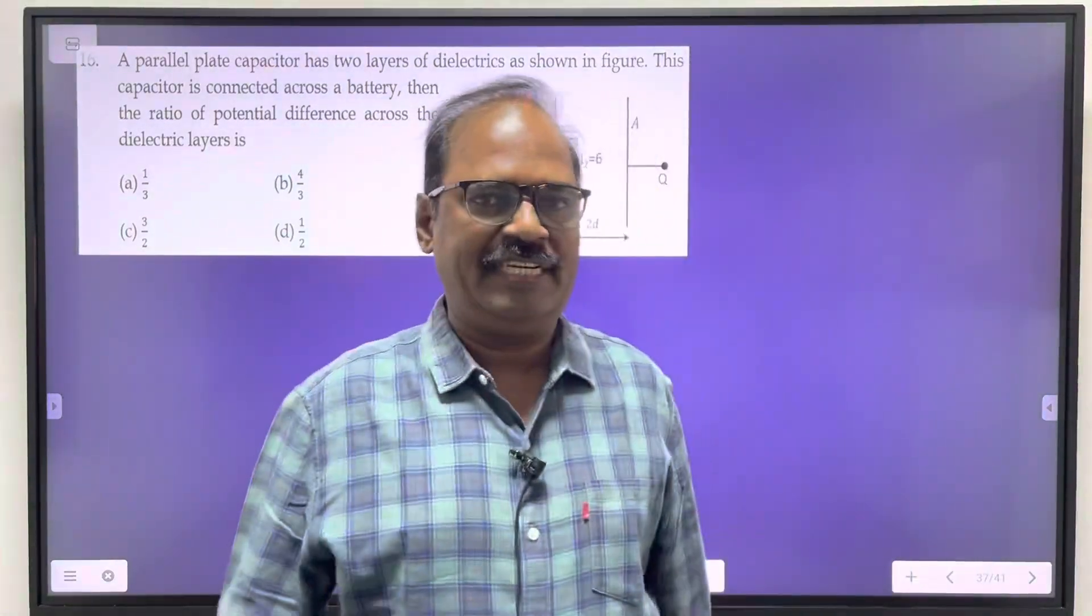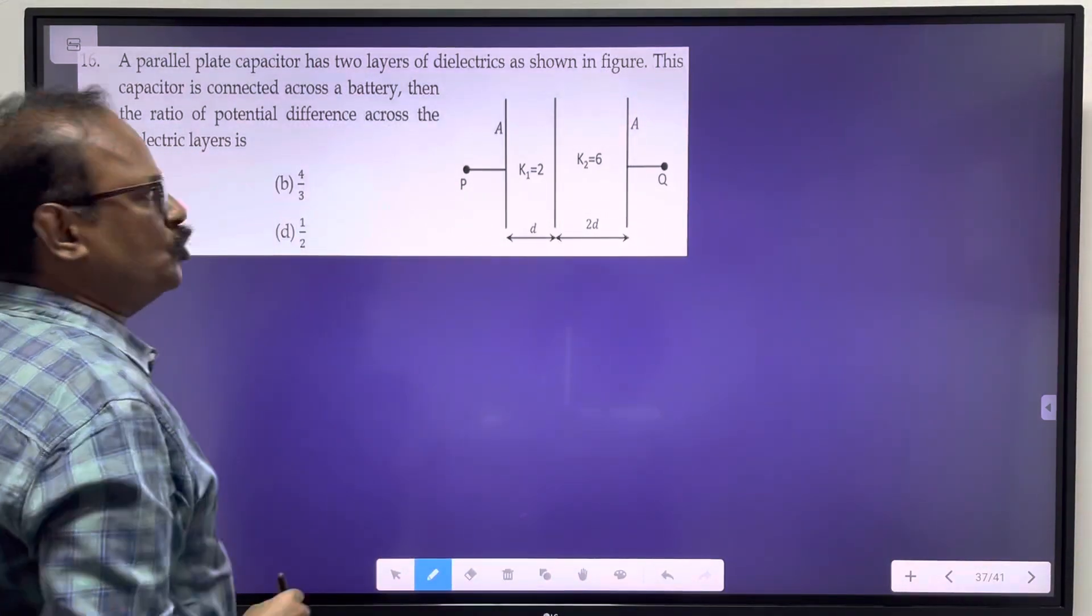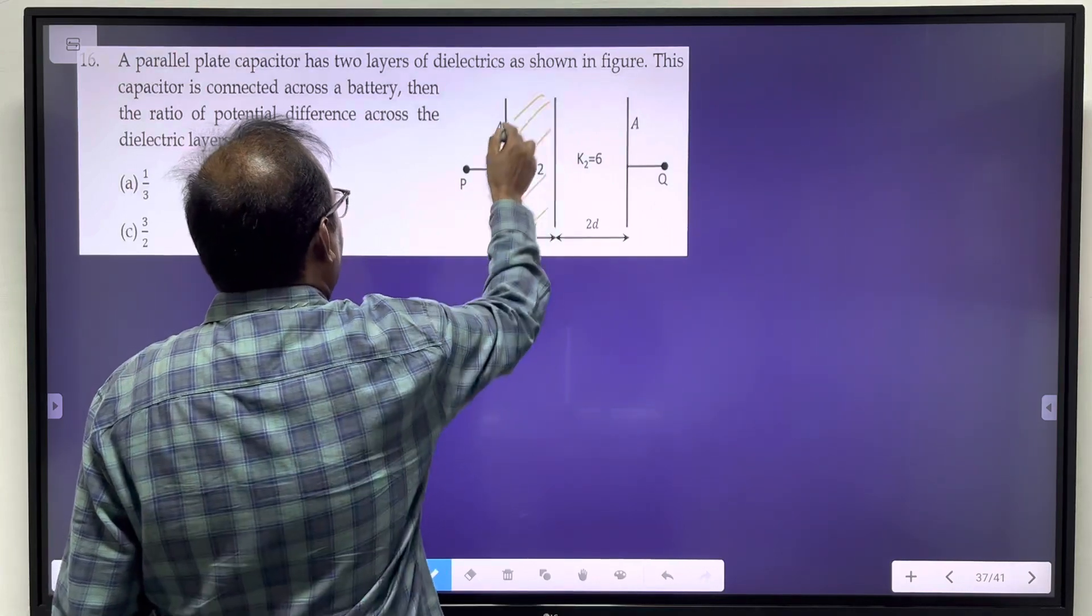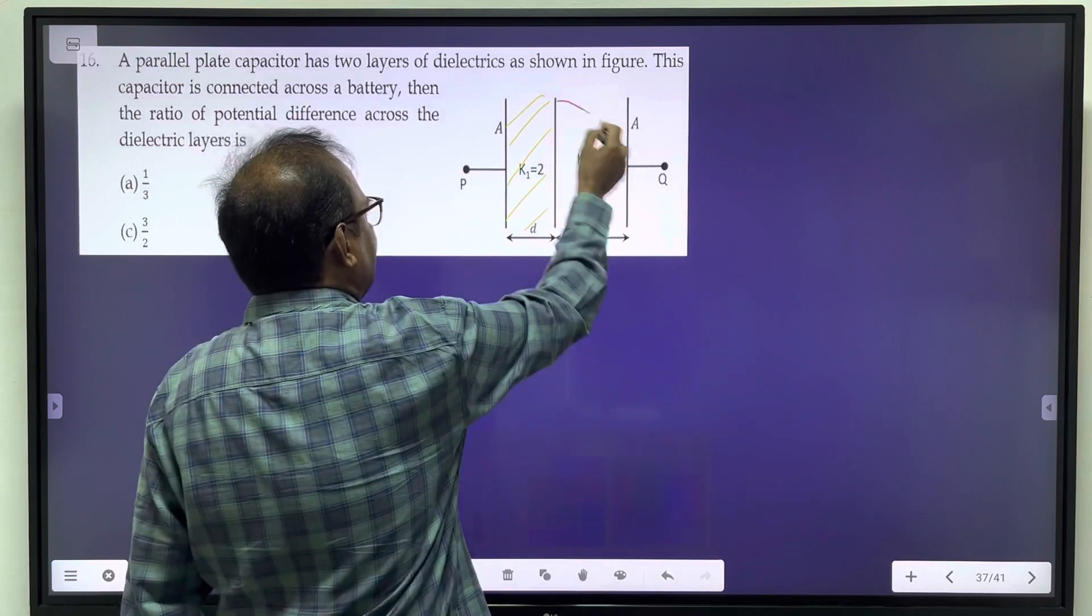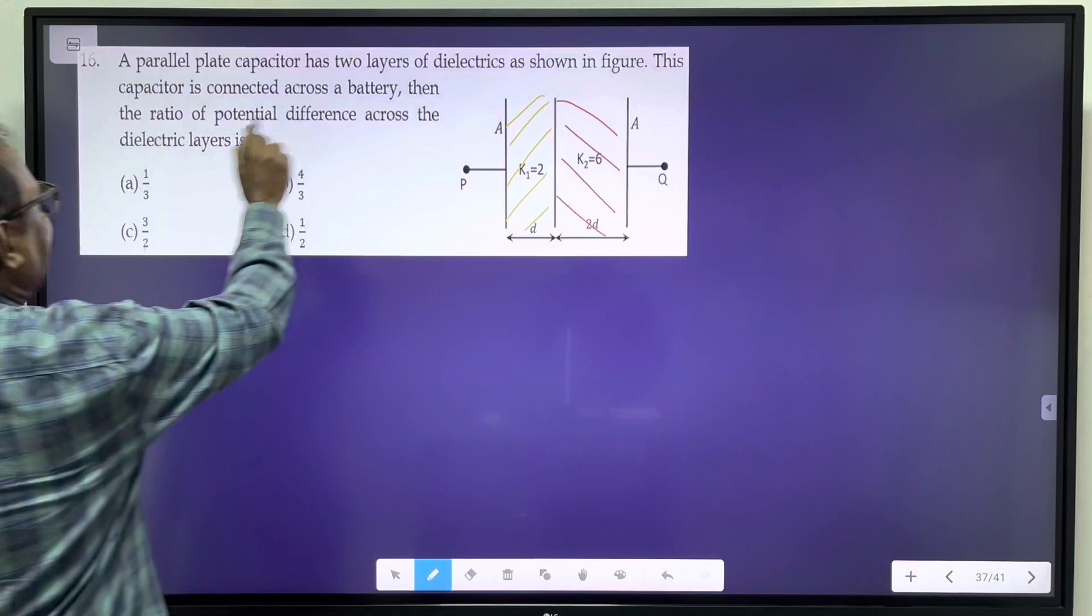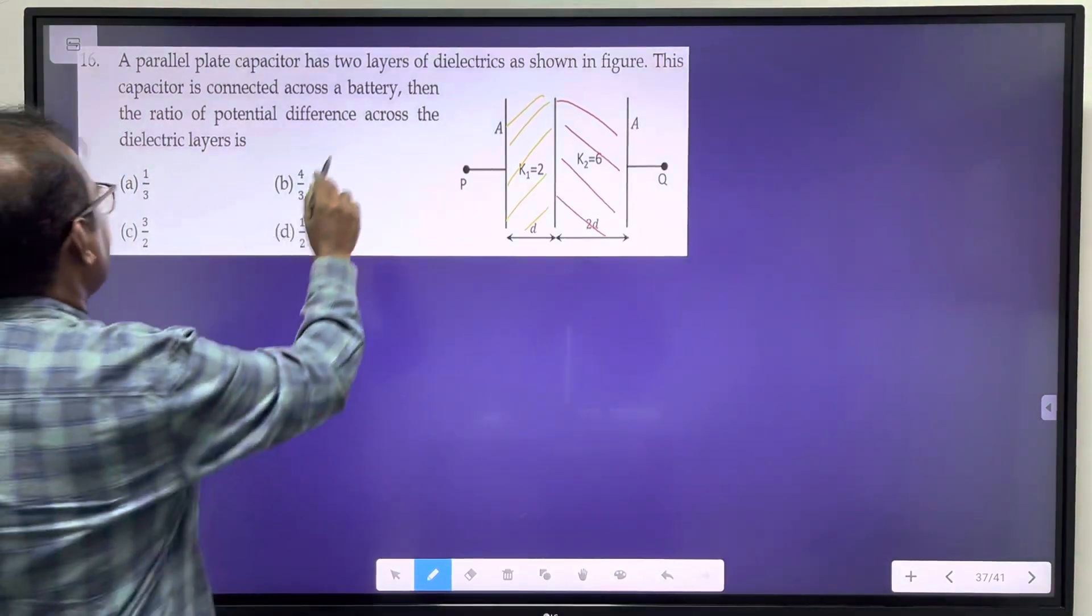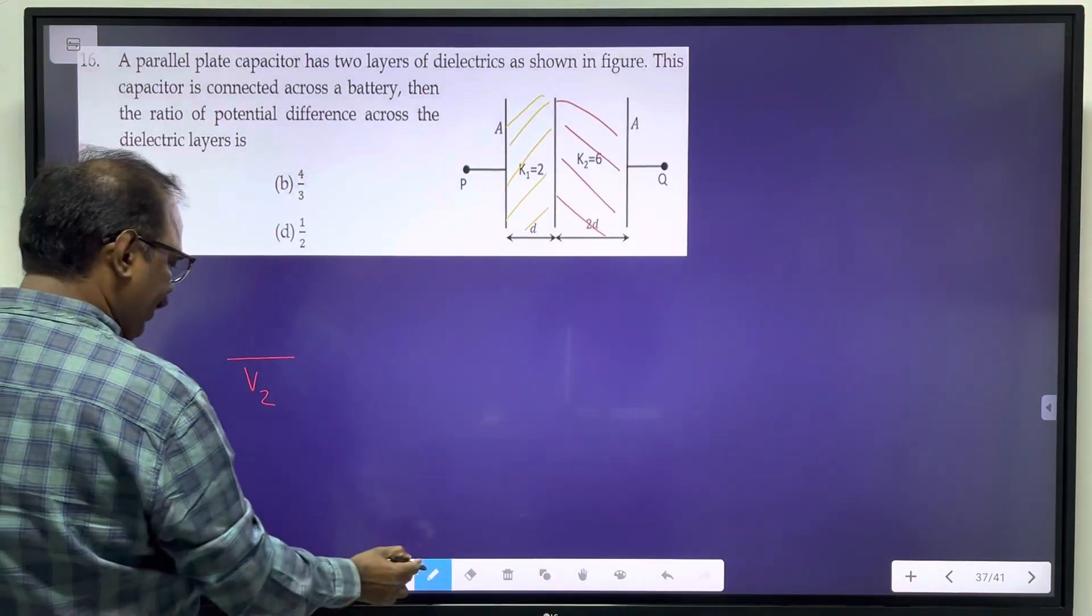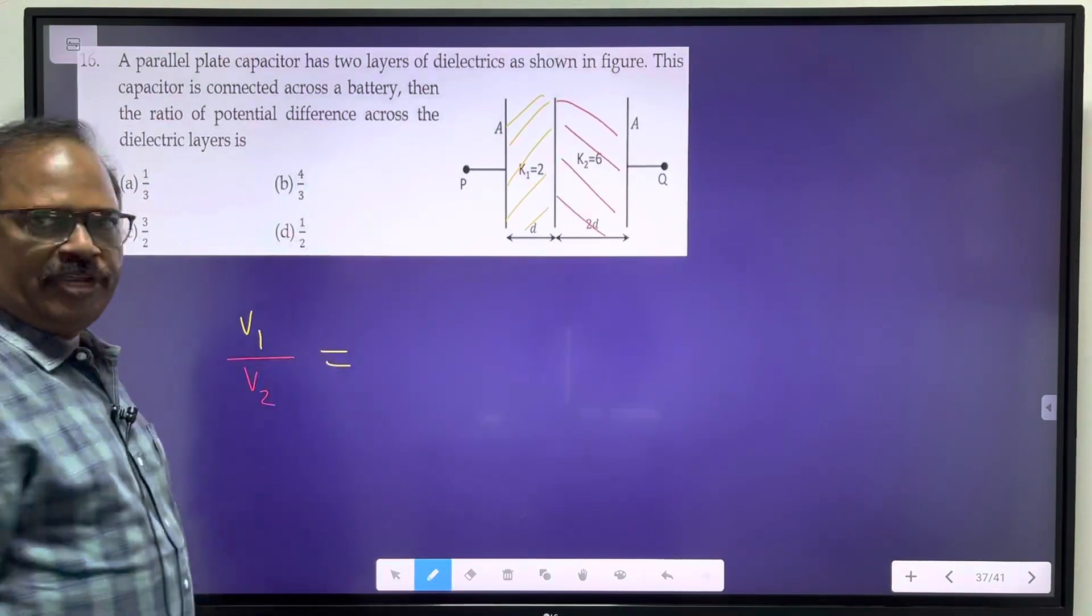Dear students, we are coming to question number 16. A parallel plate capacitor has two layers of dielectric - one dielectric medium and another dielectric. The capacitor is connected across a battery. Then the ratio of the potential difference across the two dielectrics, V1 by V2.